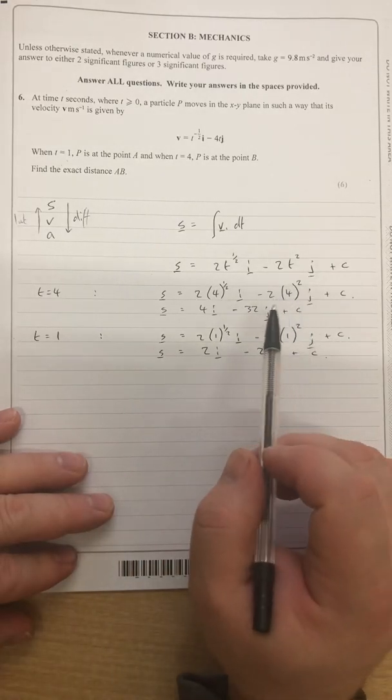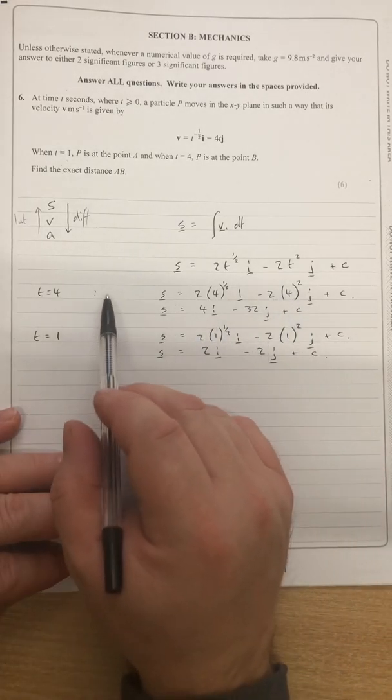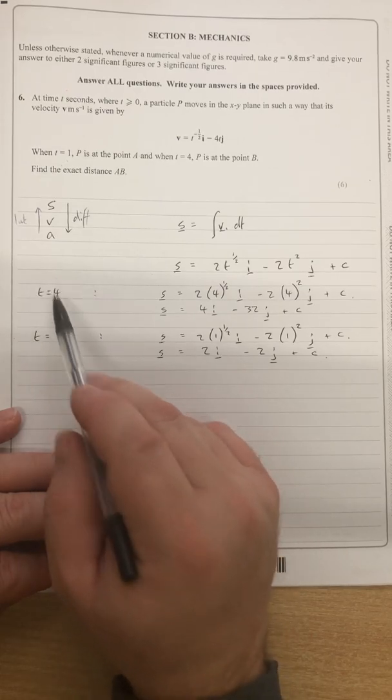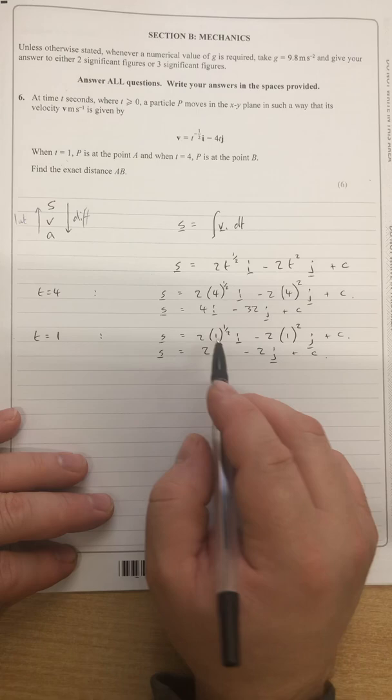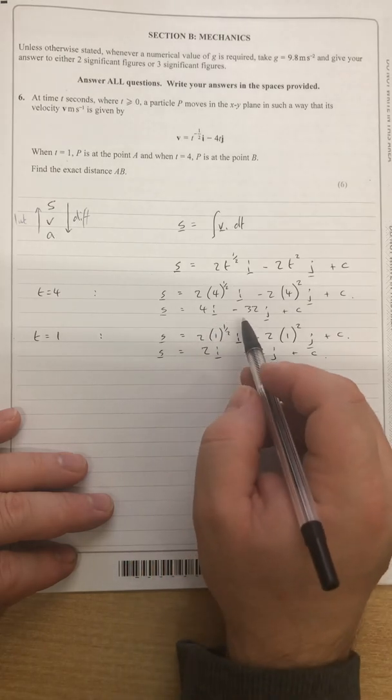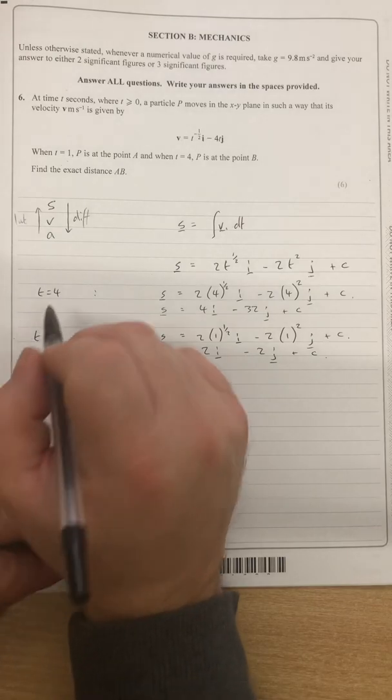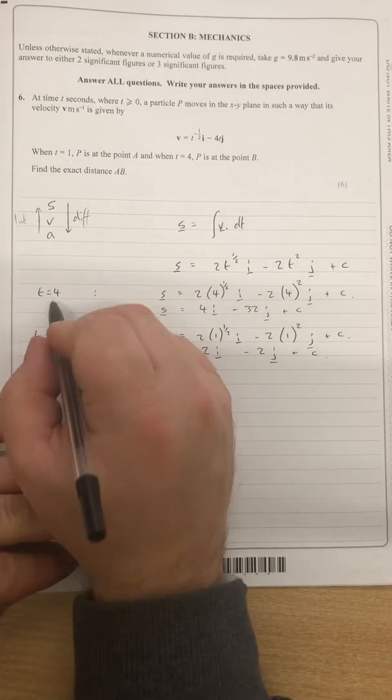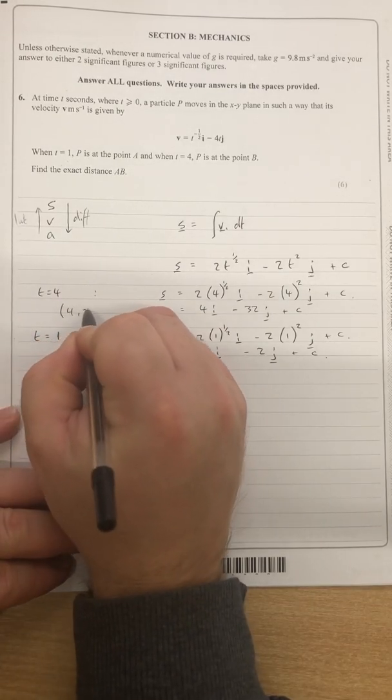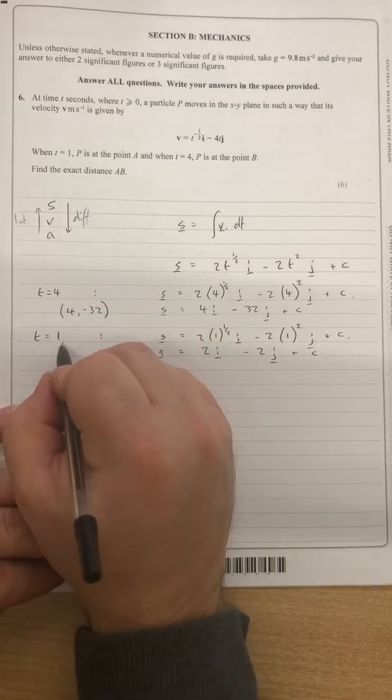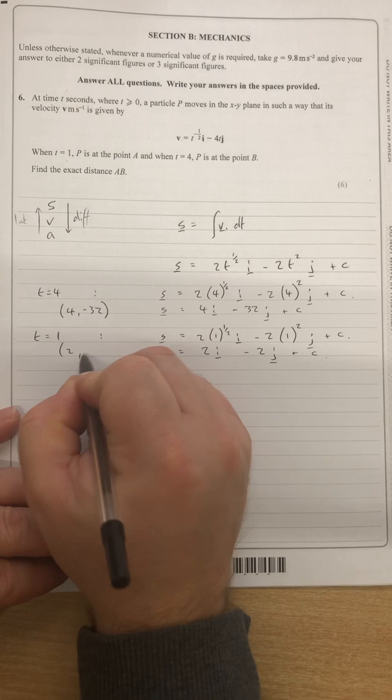So I can say that I've done this around because if you're looking for the difference, you'd normally do the later one take away the earlier one. We could say perhaps that the coordinates of this is going to be 4 and minus 32, and the coordinates at this time would be 2 and minus 2.